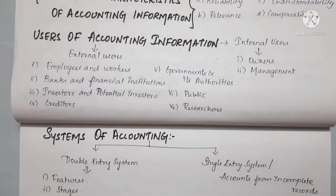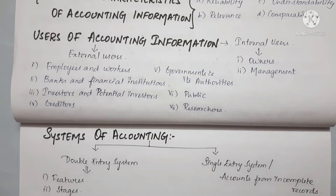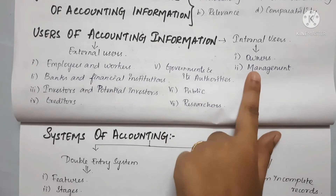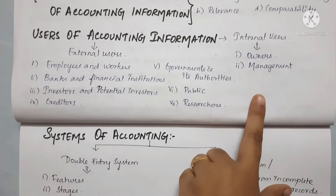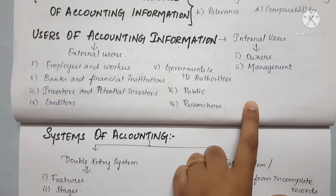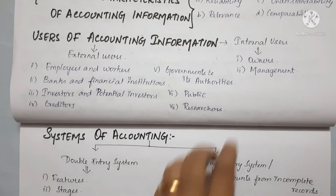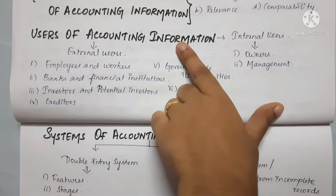In terms of users, we can divide them into internal and external users. Internal users look at business profit or loss. Management uses accounting information for decision making, fixing prices, cost control, reducing investment, and future planning.